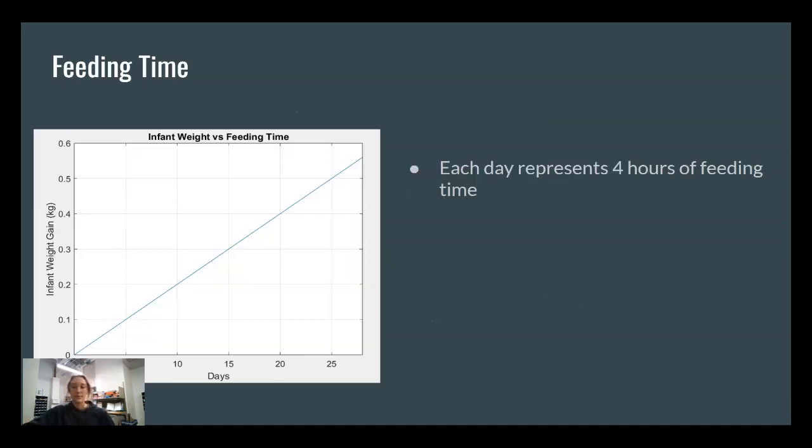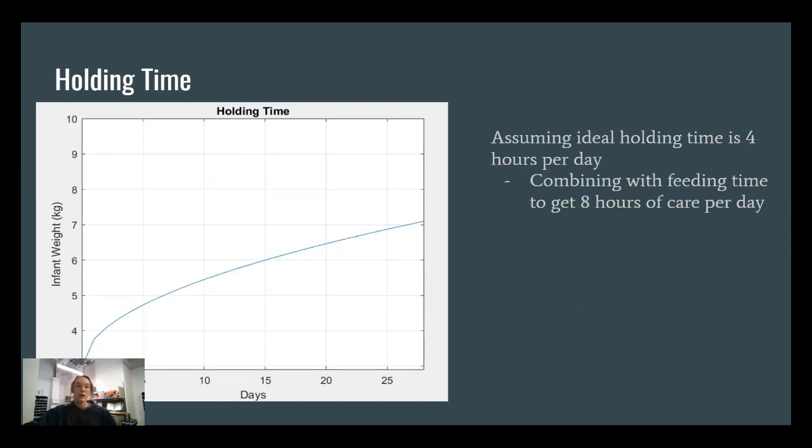Feeding time. This is our first independent parameter. Each day represents four hours of feeding time, and you can see if the baby gets fed zero hours per day, then it will gain zero weight. So our holding time is a lot like the feeding time, except we have a different y-intercept. This, we are not measuring the change in weight, but we are actually just measuring the infant weight in general. So we are going to have a different y-intercept of three kilograms instead of zero. And if you combine this with the feeding time, you get eight hours of ideal care per day, which is the standard.